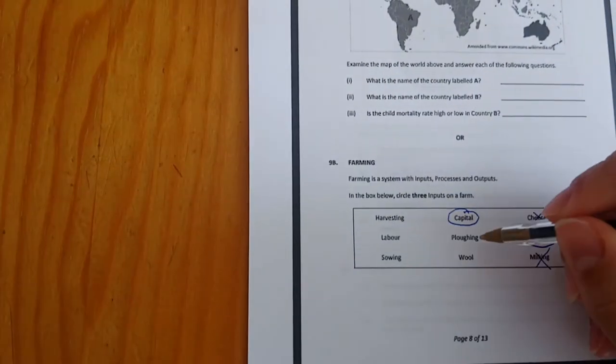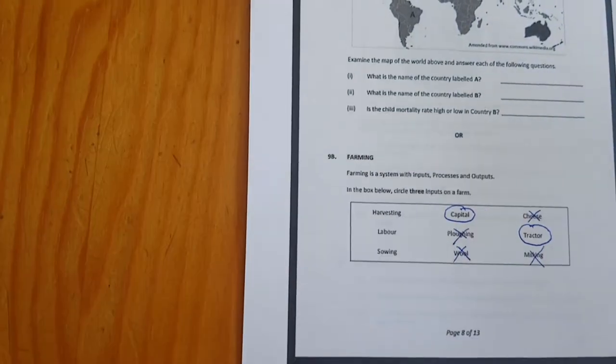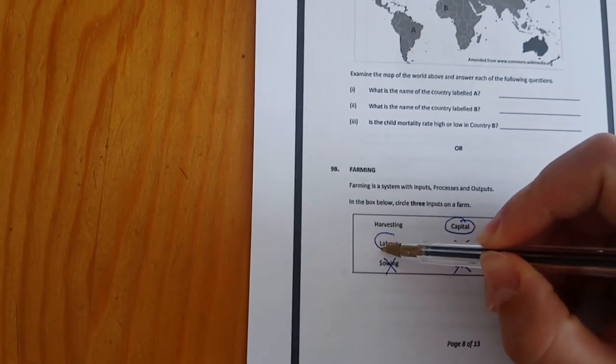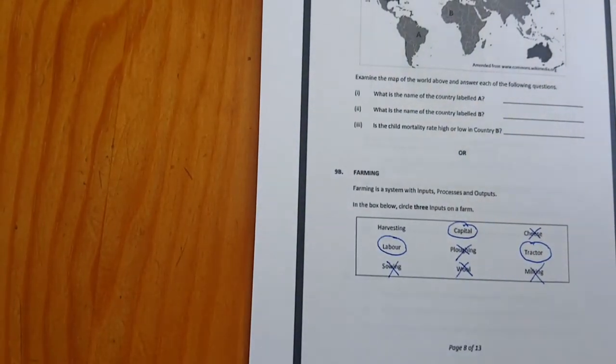Ploughing is a process, wool is an output, sowing is a process, labour is an input. So there we have our three there.